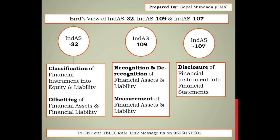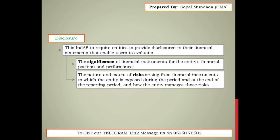Under Indian AS 107, provisions with respect to disclosure are provided and now we are going to discuss those provisions. Indian AS 107 is a very small standard as compared to Indian AS 32 and Indian AS 109. Indian AS 107 provides that an entity disclose the importance of financial instruments for such entity. Financial instruments basically include financial assets, financial liabilities, and equity instruments. While disclosing such financial instruments, the entity must disclose the benefits of such financial instruments, and also all risks related to such financial instruments.